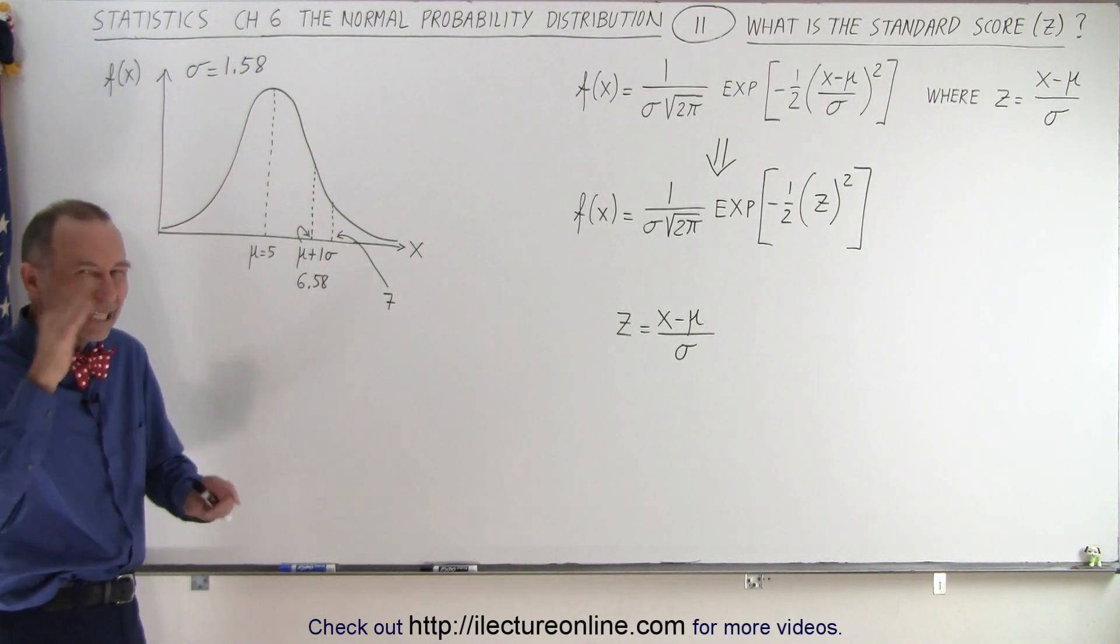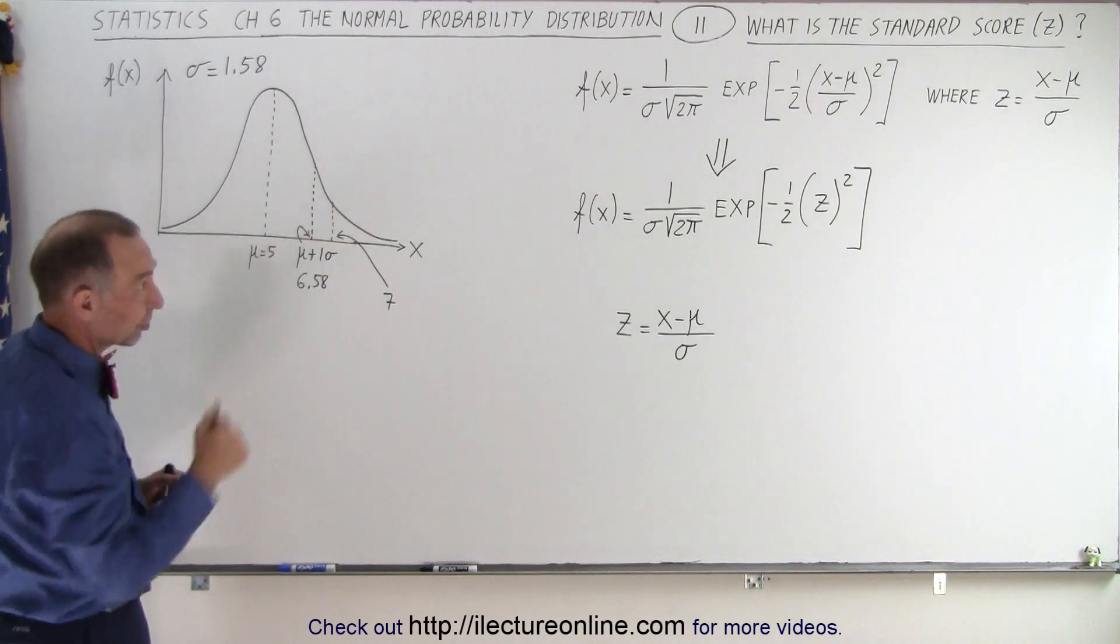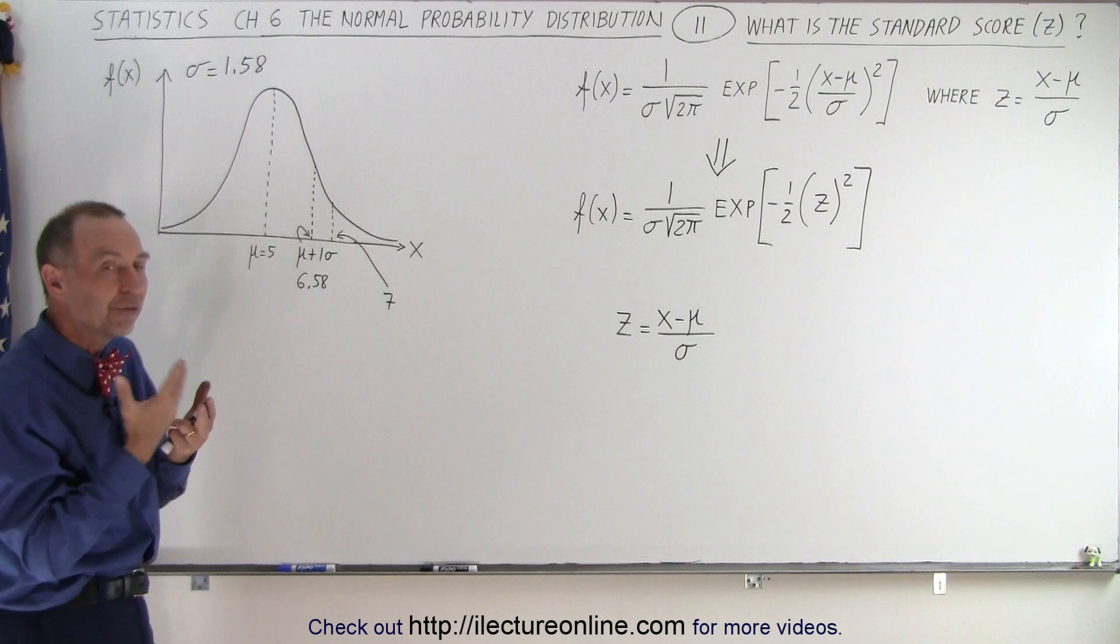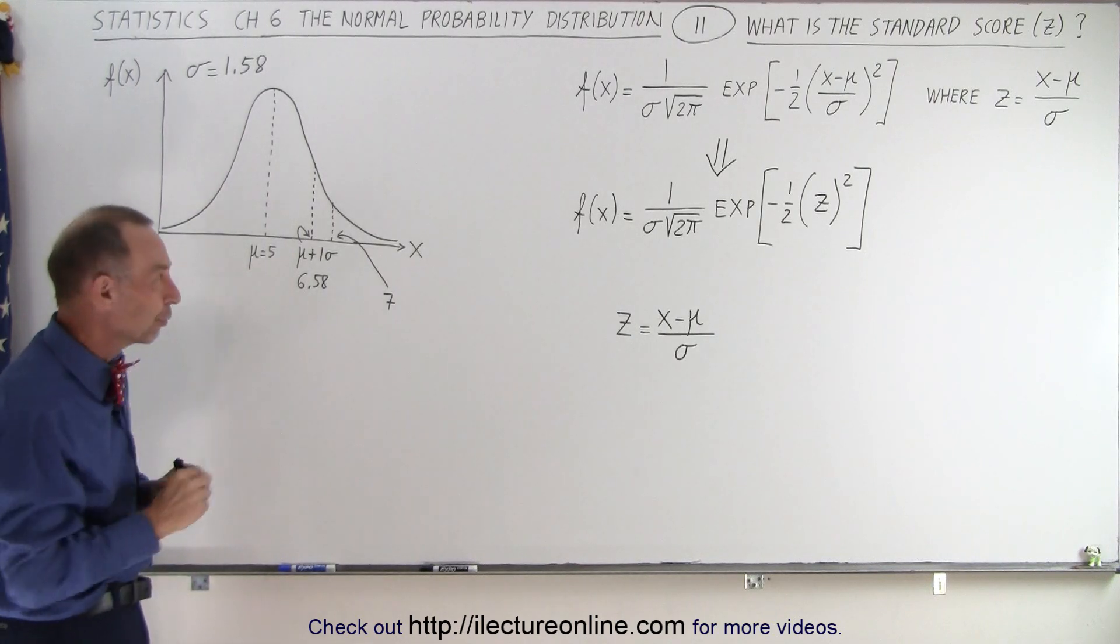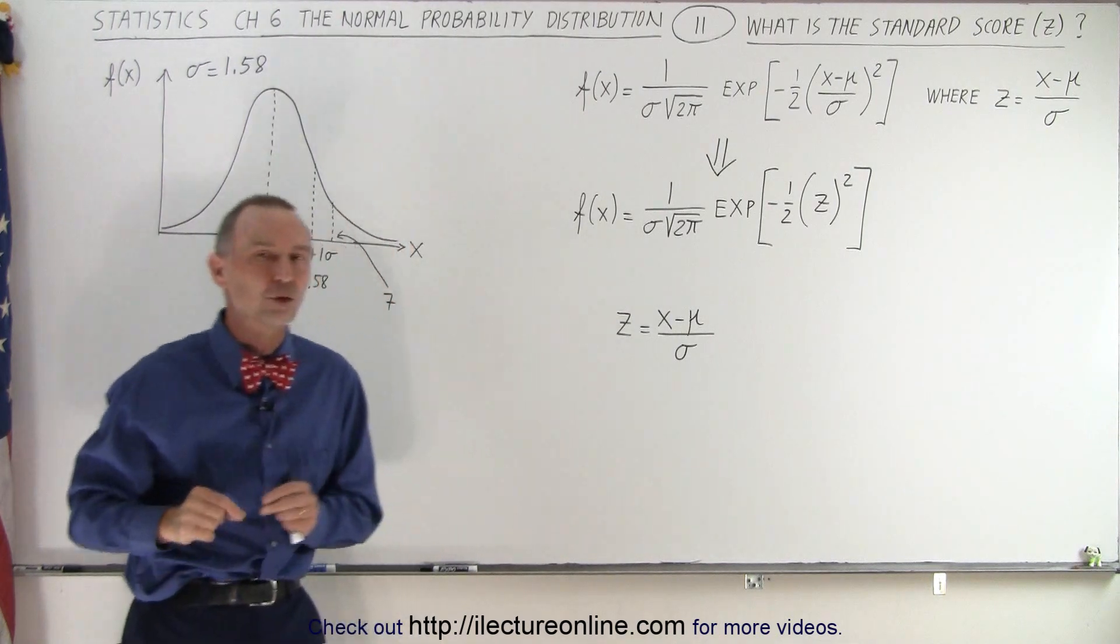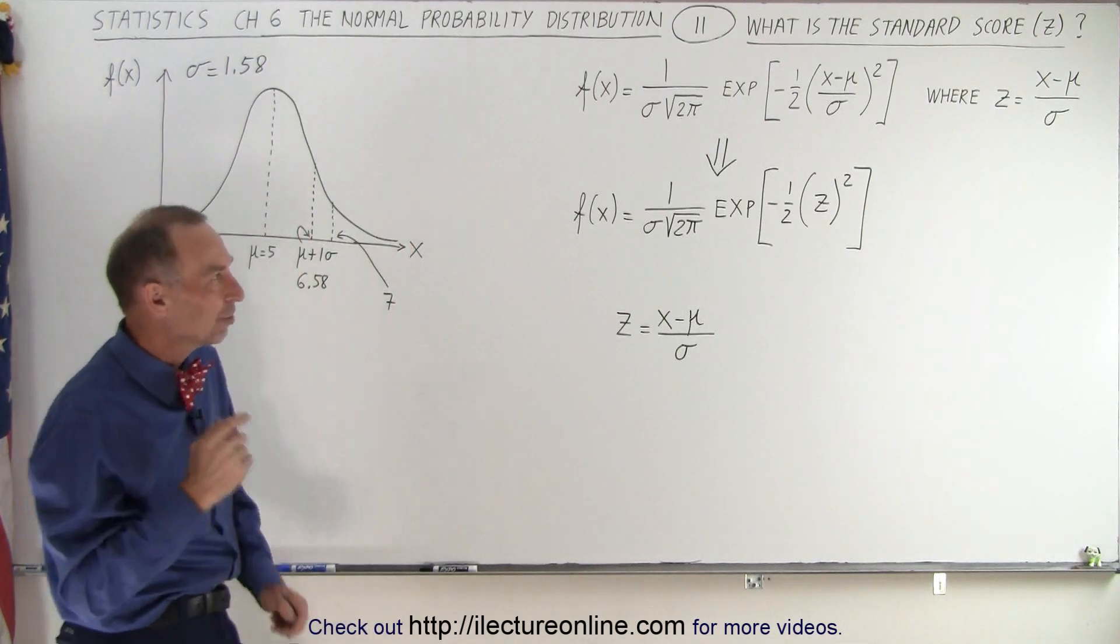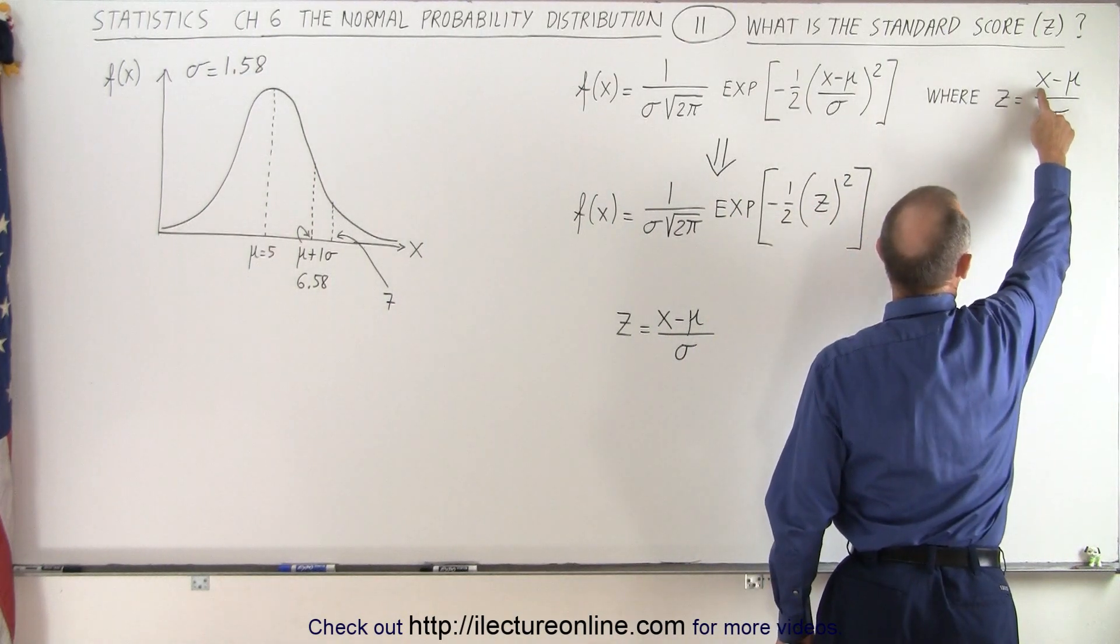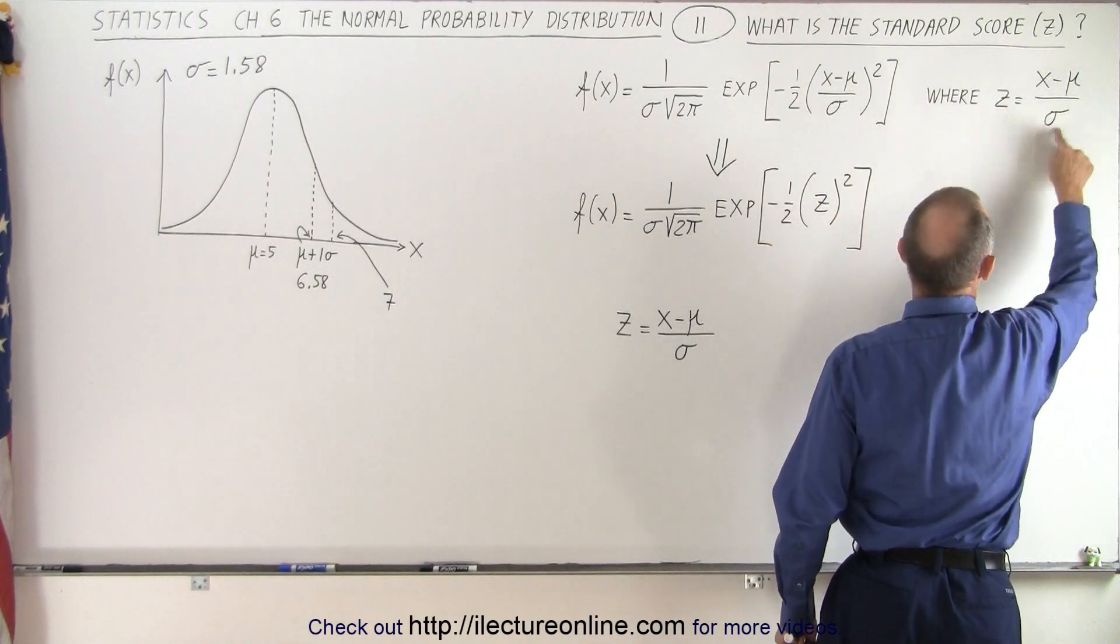So instead of trying to integrate that function, and we have the function up on the board there, we don't want to do that. We have a way of getting the value for the area under the curve. But to do that, we have to have the value for the standard score, that letter Z. And it's defined as X, the random variable X, minus the mean divided by sigma.